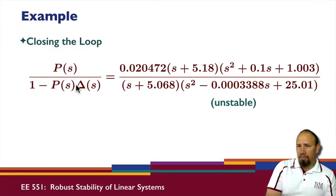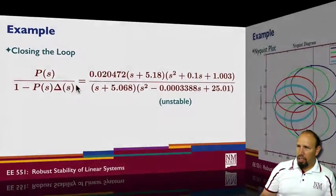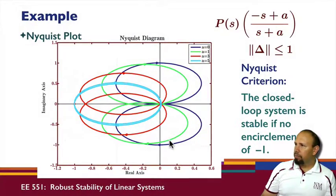The magnitude of W is one. If I take my plant and the uncertainty of this form for some value of a, what I've gone through here is I've shown the Nyquist plot of all of this, which includes the uncertainty for various values of a.